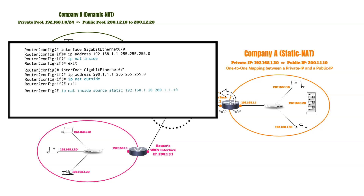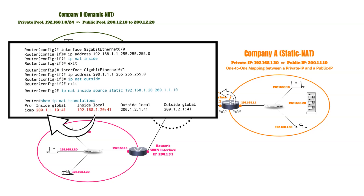This command sets up static NAT. With this configuration, when a device inside the private network with the private IP 192.168.1.20 initiates an outgoing connection, static NAT maps its private IP to a fixed pre-assigned public IP 200.1.1.10. Also, incoming traffic from external networks is directed to the internal device based on the permanent public-to-private IP mapping, ensuring consistent and predictable access to services within the network.